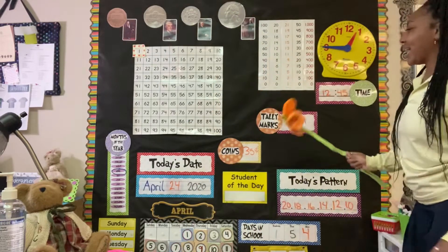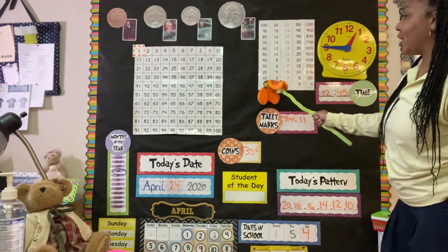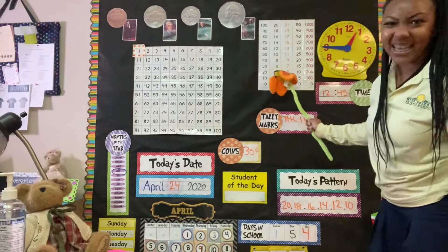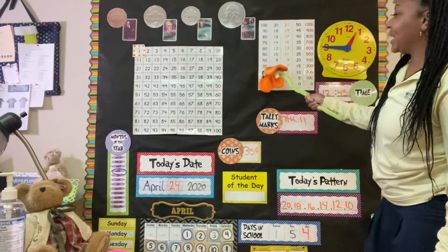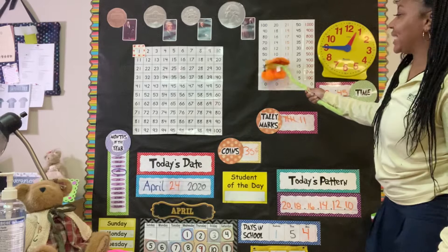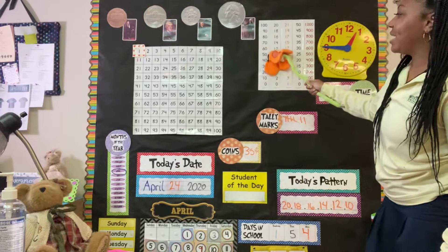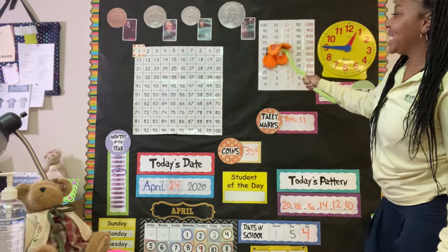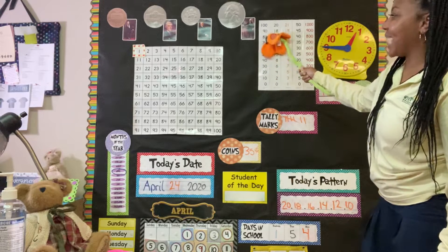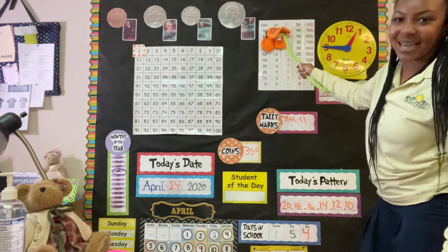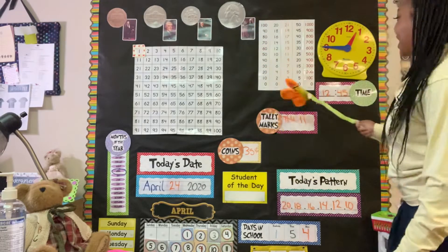And let's go ahead and count by tens. Ready? 0, 10, 20, 30, 40, 50, 60, 70, 80, 90, 100. Good job.